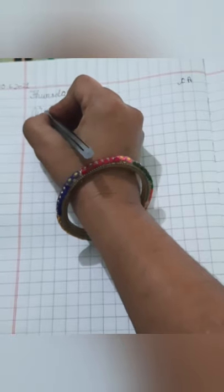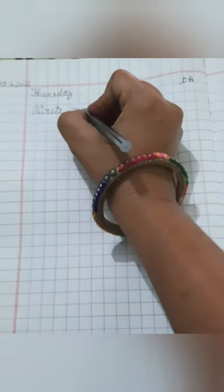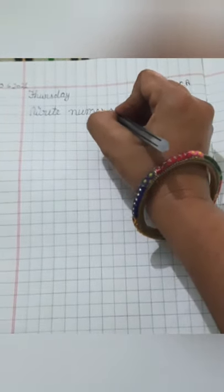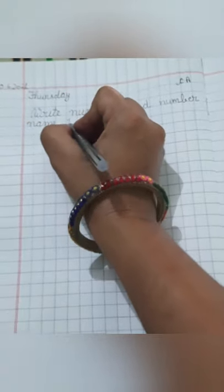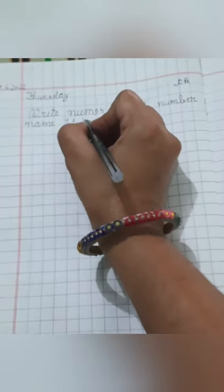You will write here C-A. Write numeral N-U-M-E-R-A-L numeral. And number N-U-M-B-E-R number name 11 to 20. Okay students?